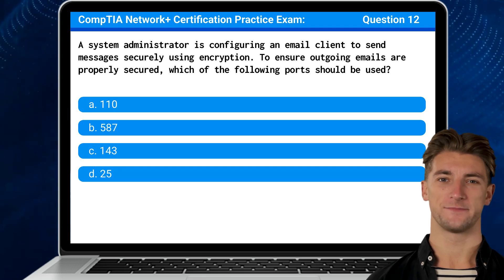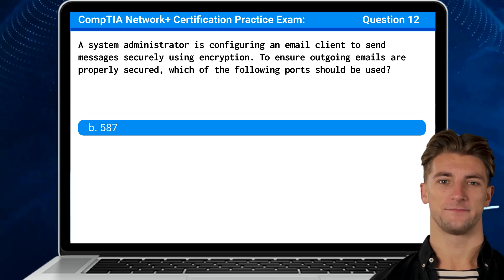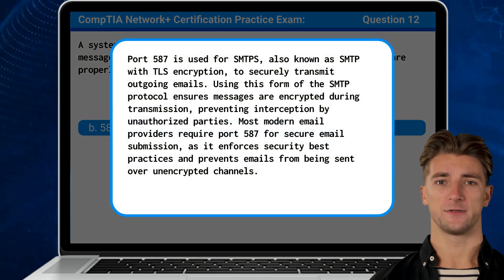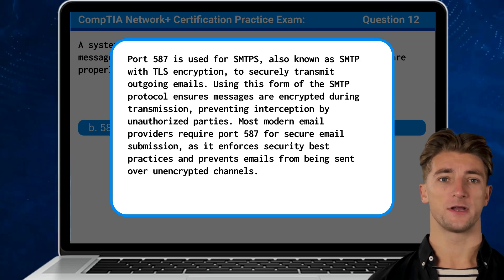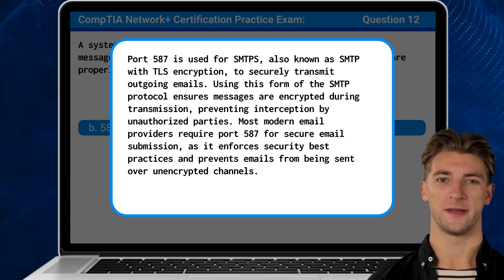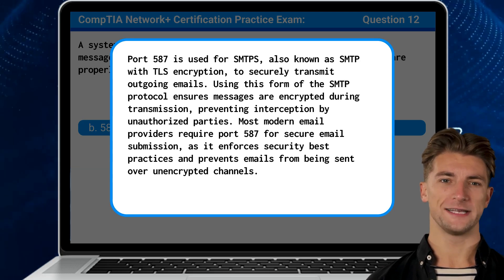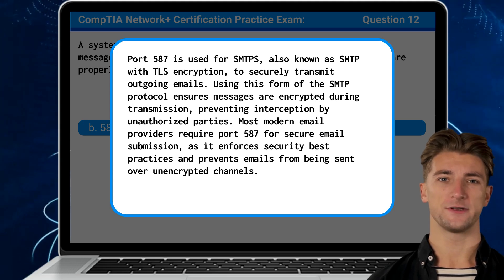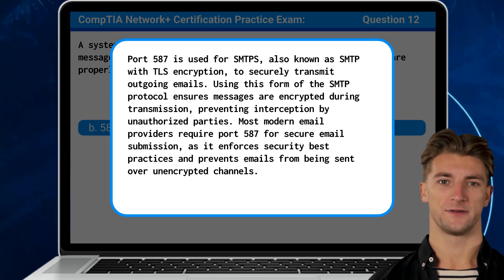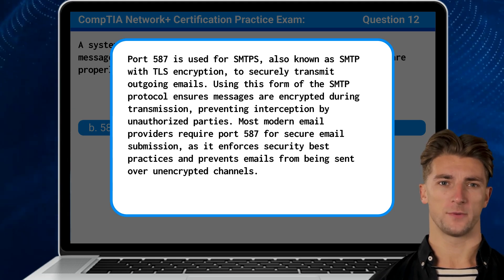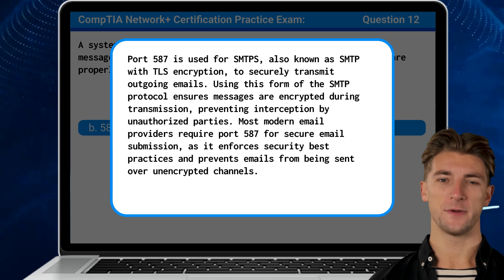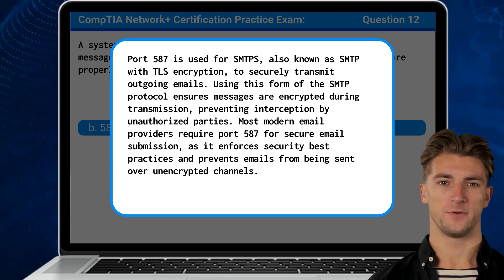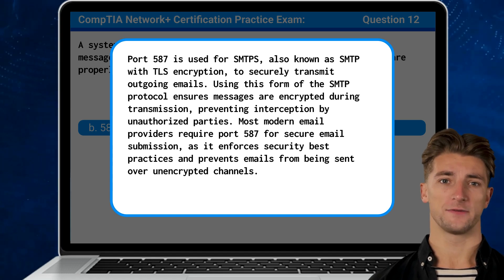The answer is B — Port 587. Port 587 is used for SMTP with TLS encryption to securely transmit outgoing emails. Using this form of the SMTP protocol ensures messages are encrypted during transmission, preventing interception by unauthorized parties. Most modern email providers require port 587 for secure email submission, as it enforces security best practices and prevents emails from being sent over unencrypted channels.